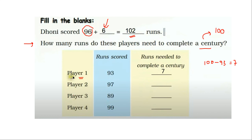Player 2 needs how many runs to complete a century? 100 minus 97 is equal to 3. A century is 100, so player 2 needs 3 more runs to complete a century. Player 3 needs how many runs to complete a century? 100 minus 89 is equal to 11. So player 3 needs 11 more runs to complete a century, that is to complete 100 runs, player 3 needs 11 runs more.